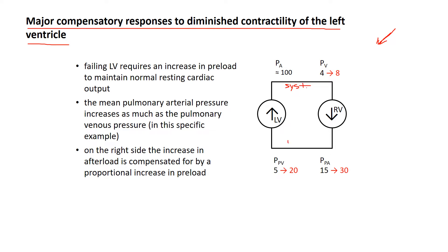I've labeled this diagram with some reasonable pressures in black. On the systemic side: 100 mmHg mean arterial pressure, mean venous pressure of around 4. That 4 represents the preload to the right ventricle. The pulmonary pressures are 15 mmHg arterial and 5 mmHg venous. These numbers are meant to represent reasonable values for a normal baseline physiological state.